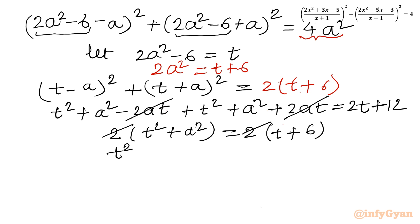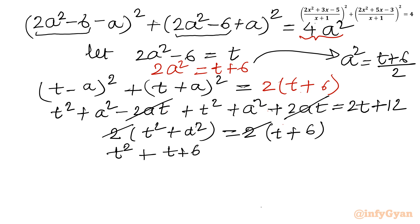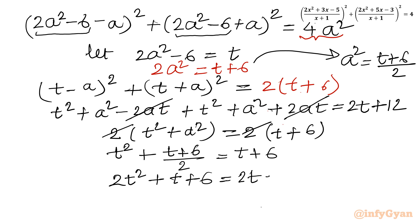Substituting a² = (t + 6)/2, we get t² + (t + 6)/2 = t + 6. Taking LCM: 2t² + t + 6 = 2t + 12. Taking all terms to one side gives the quadratic equation 2t² - t - 6 = 0.